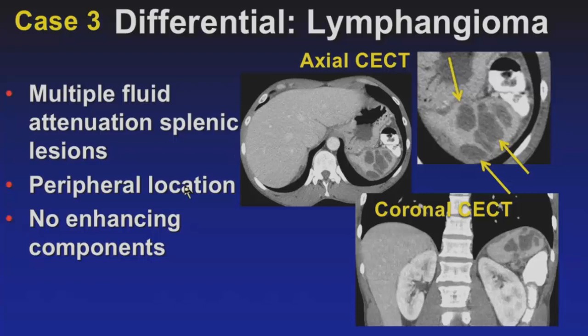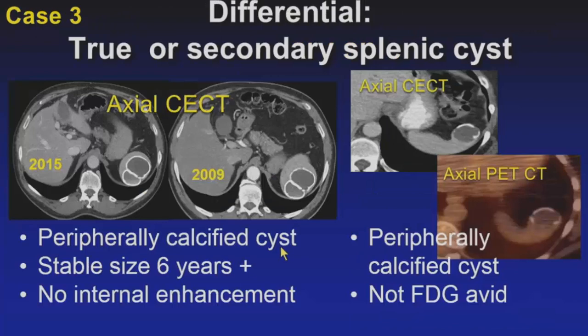Lymphangioma is a developmental lesion that can occur almost anywhere in the body including the spleen, with multiple fluid-filled channels, some peripheral in location, and no enhancing components. Finally, true or secondary splenic cysts — true cysts are developmental with an epithelial lining; secondary cysts are thought to arise from prior trauma or hemorrhage. We cannot distinguish these by imaging, and the differentiation isn't important since they are benign no-touch lesions, stable over years, with no FDG avidity.